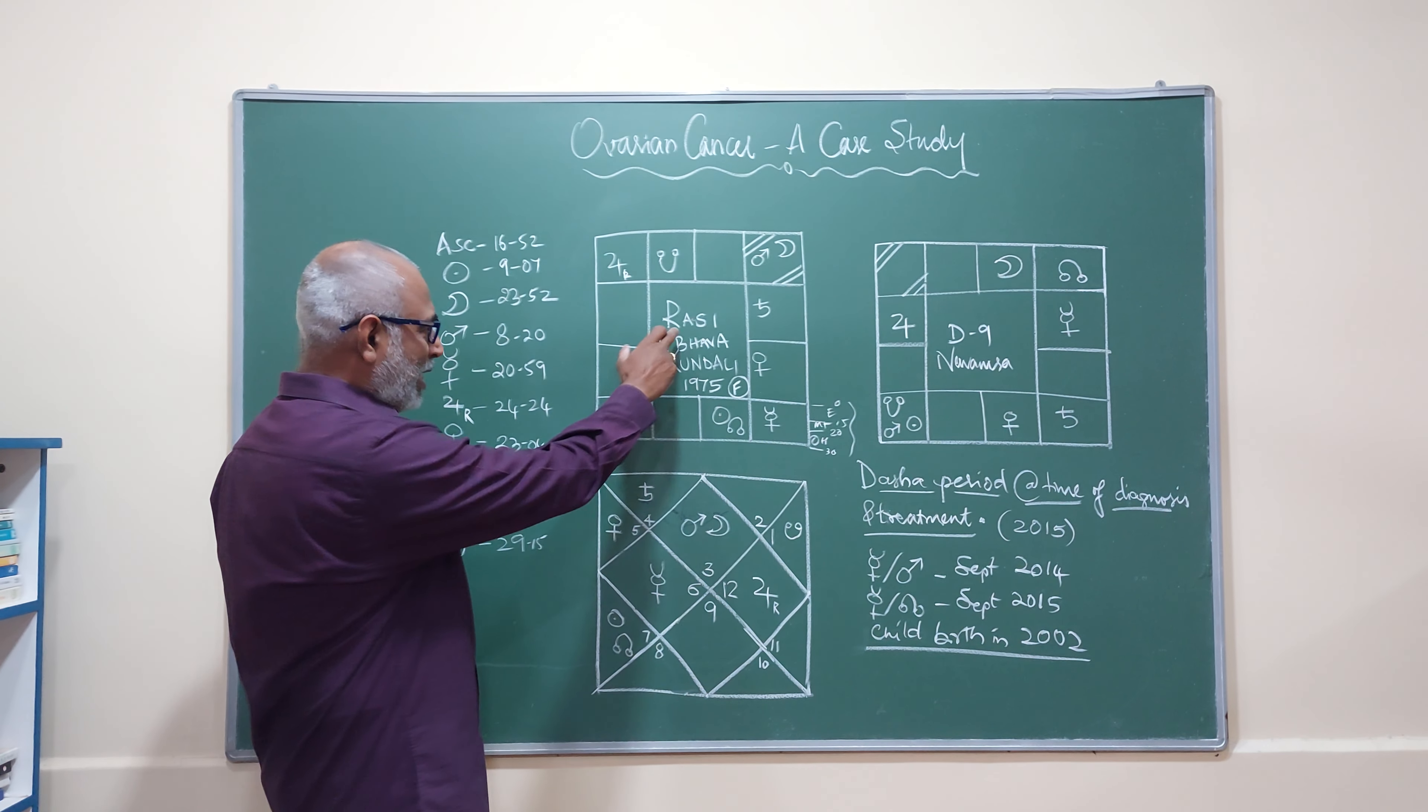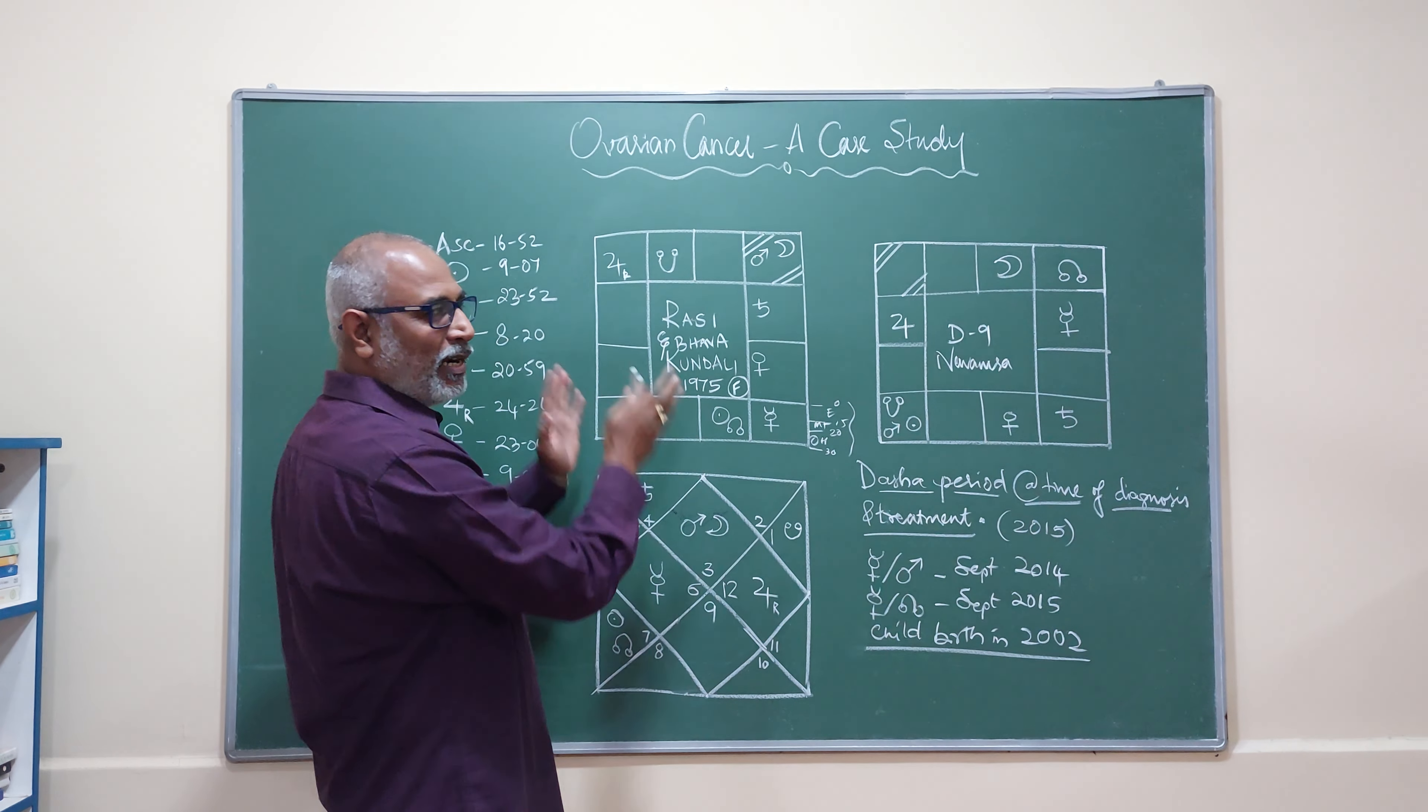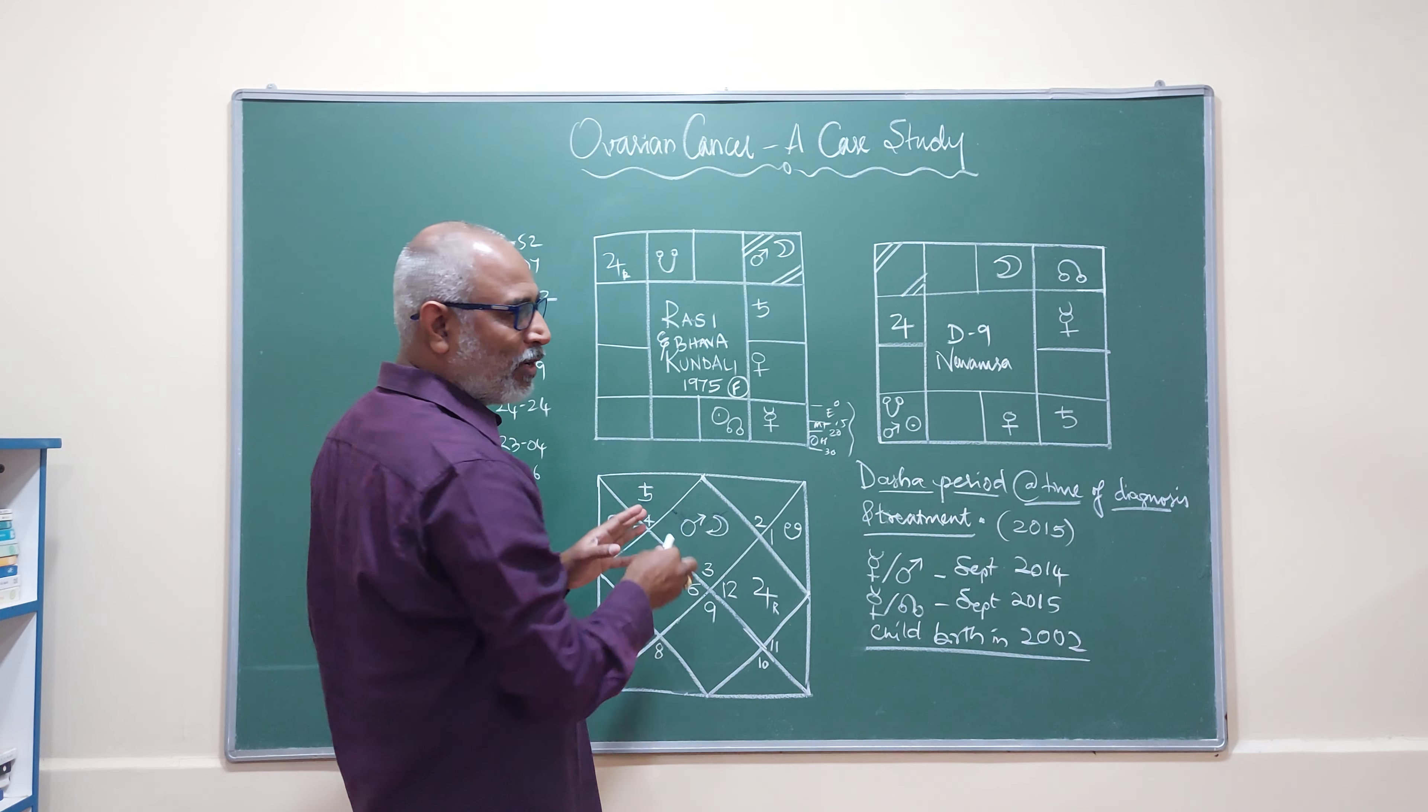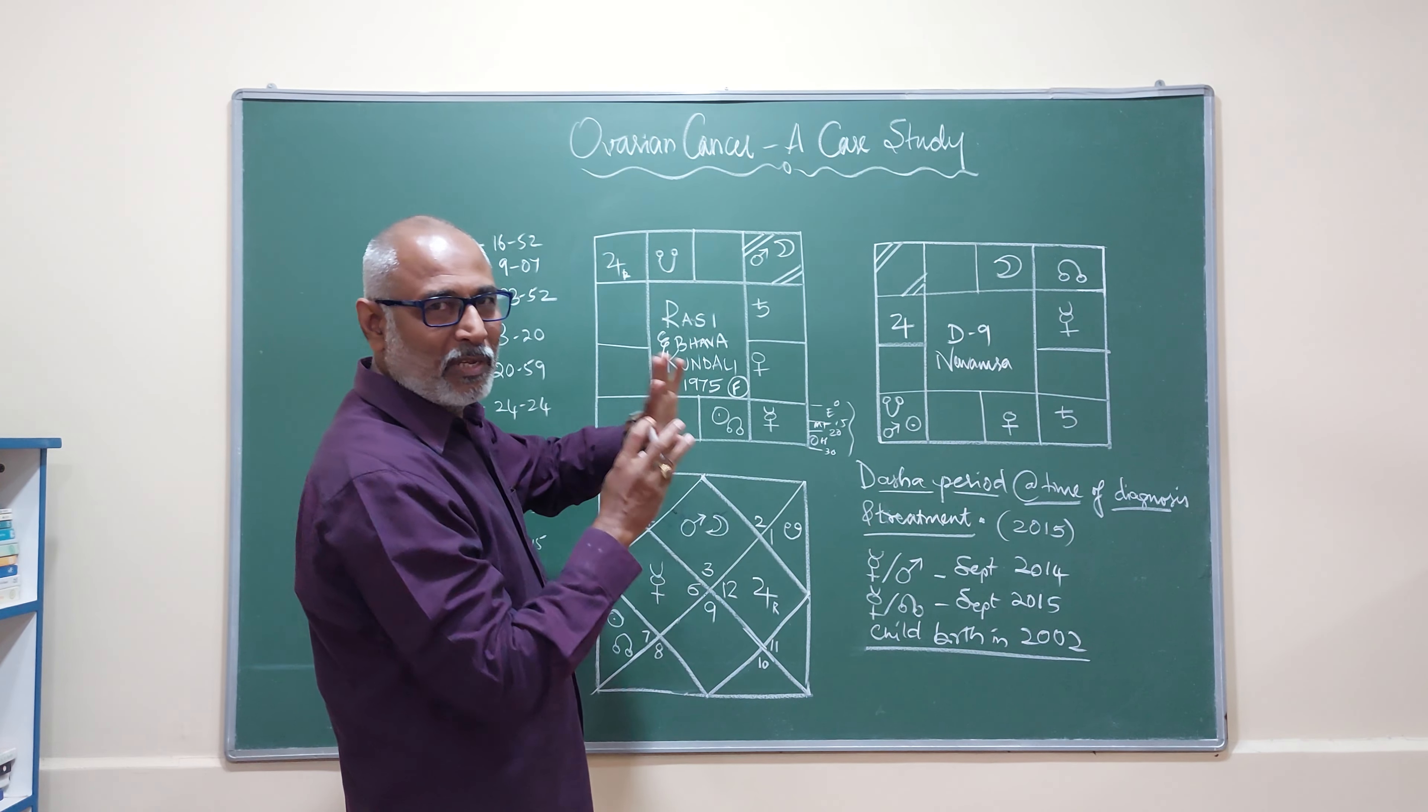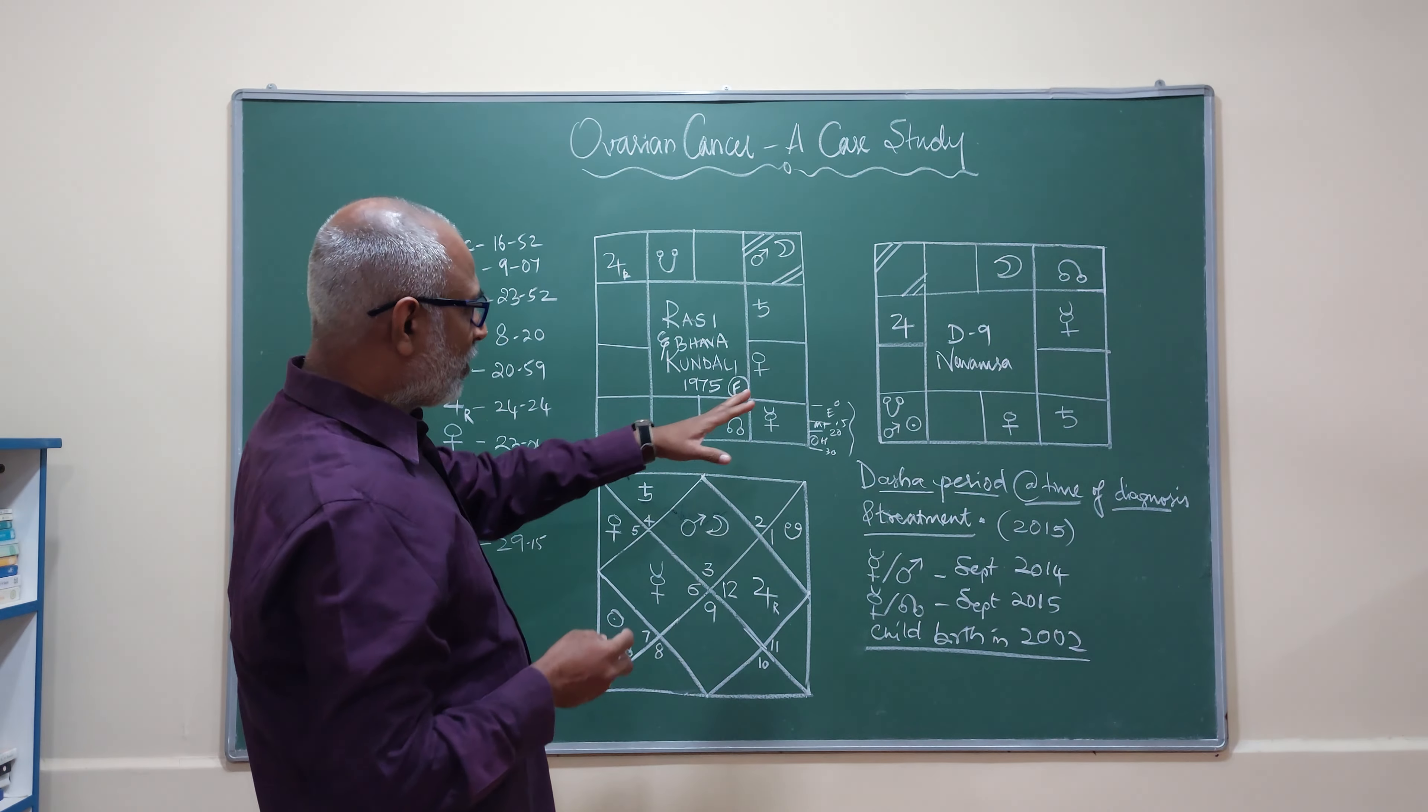Mercury is in its own house. It's not exalted. Very simple fast explanation is 0 to 15 degrees is exaltation, 15 to 20 degrees is Moolatrikhona and 20 to 30 degrees is own house. So that is the bifurcation of Virgo Rashi. This is Rashi and Bhava because when we go to the Bhava Kundali there are no changes. The Rashi Kundali and the Bhava Kundali remain same. This is the first house, this is the fourth house in the Rashi and the Bhava.